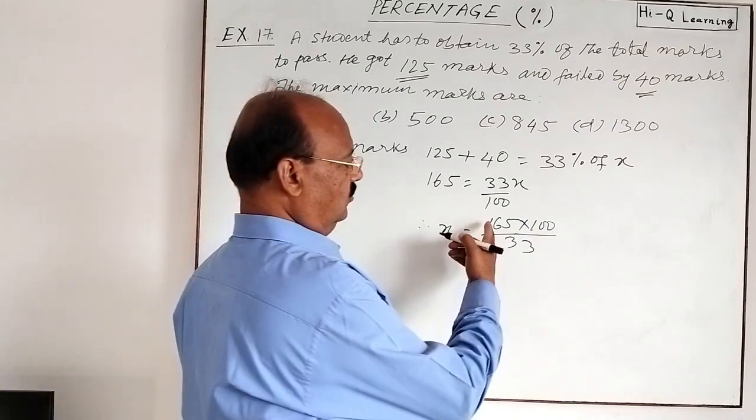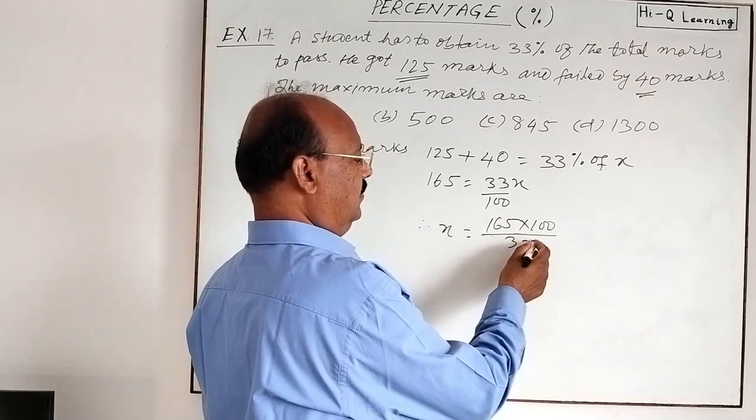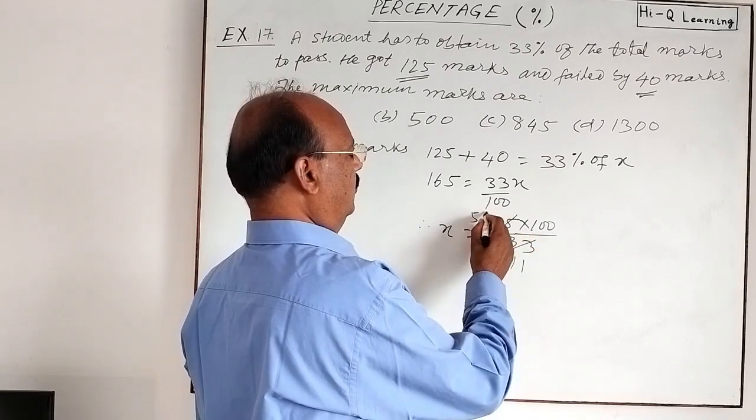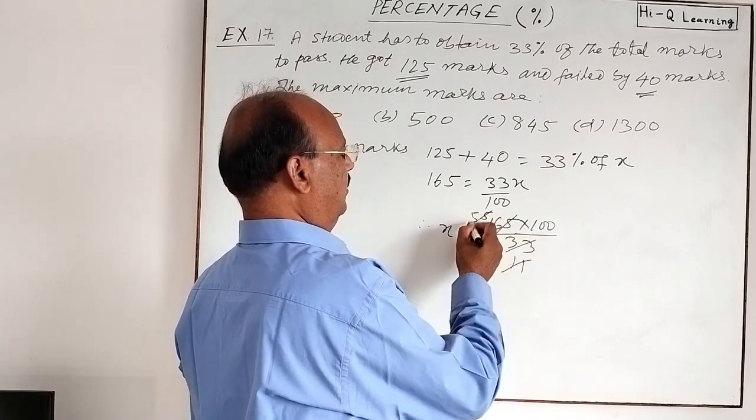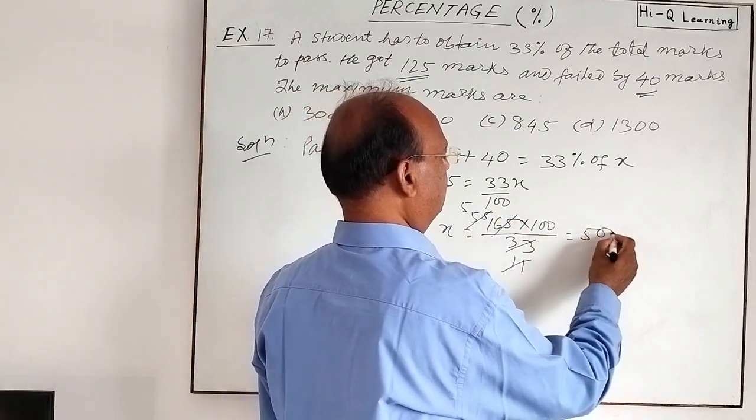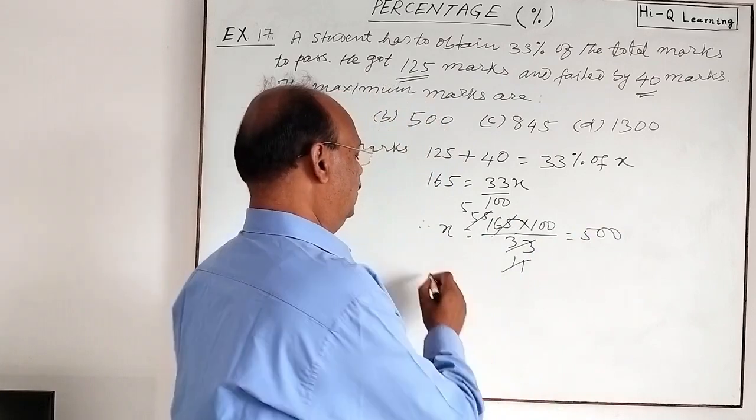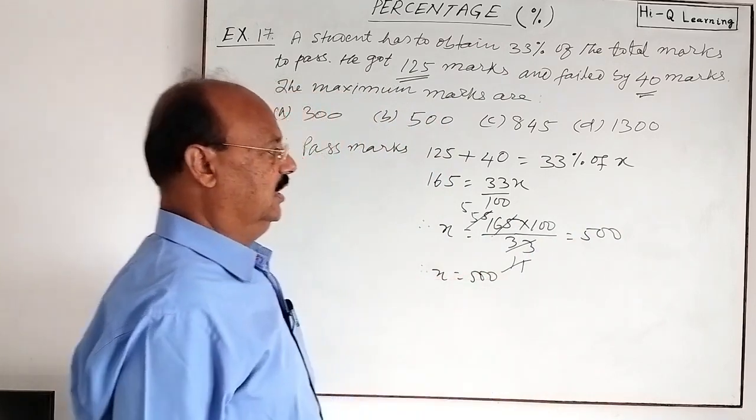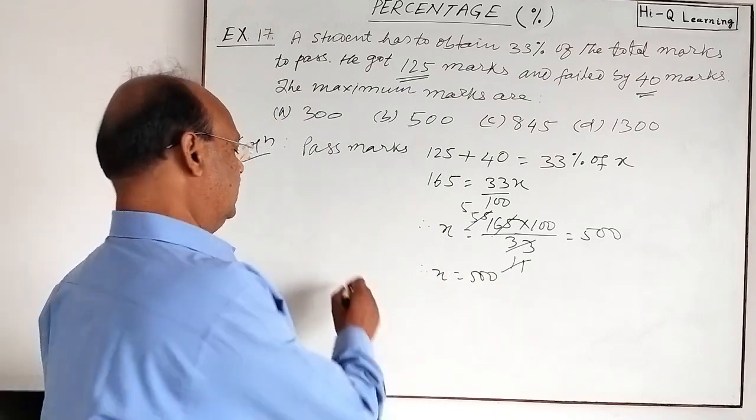165 will be cancelled out by 33. 11, 55, 11, 55, so this is equal to 5 into 100. So x is equal to how much? x is 500. And what we have assumed for x? This is total marks.